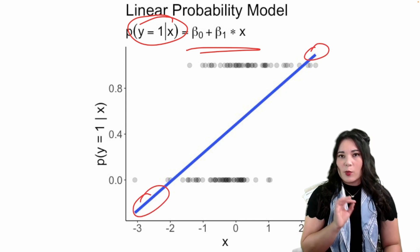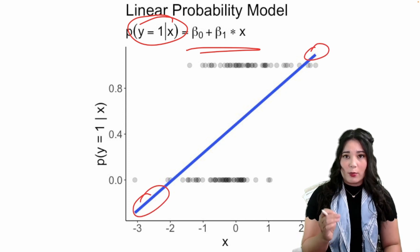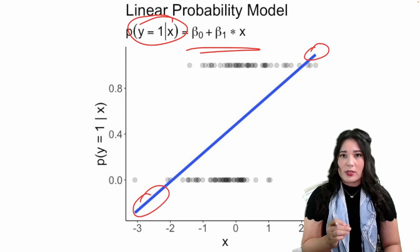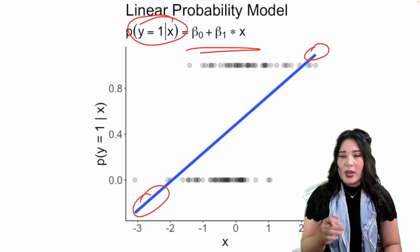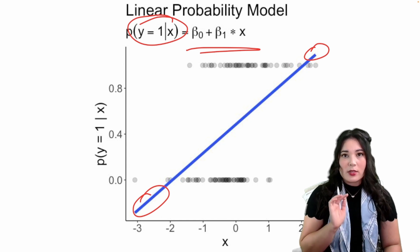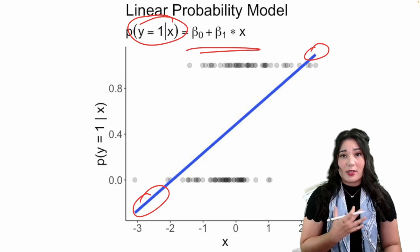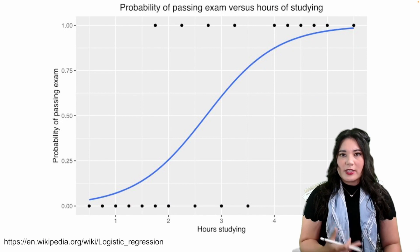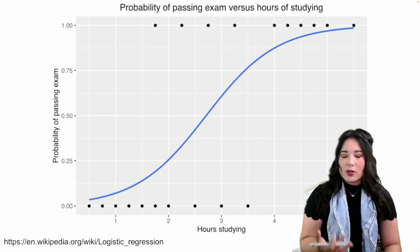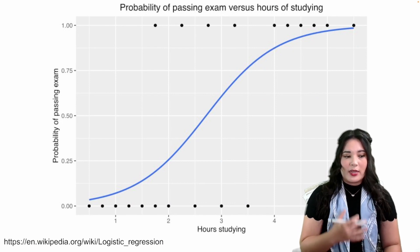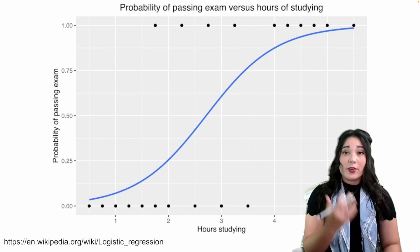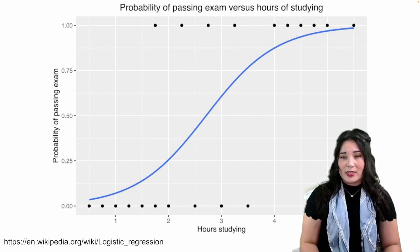Another thing that's more subtly wrong with linear probability models is that they assume a linear relationship between any of our predictors and the predicted probability. While sometimes this is okay, there are other times when this is not ideal. For instance, let's look at this example: here we're looking at the relationship between the number of hours you spent studying and whether or not you passed an exam.